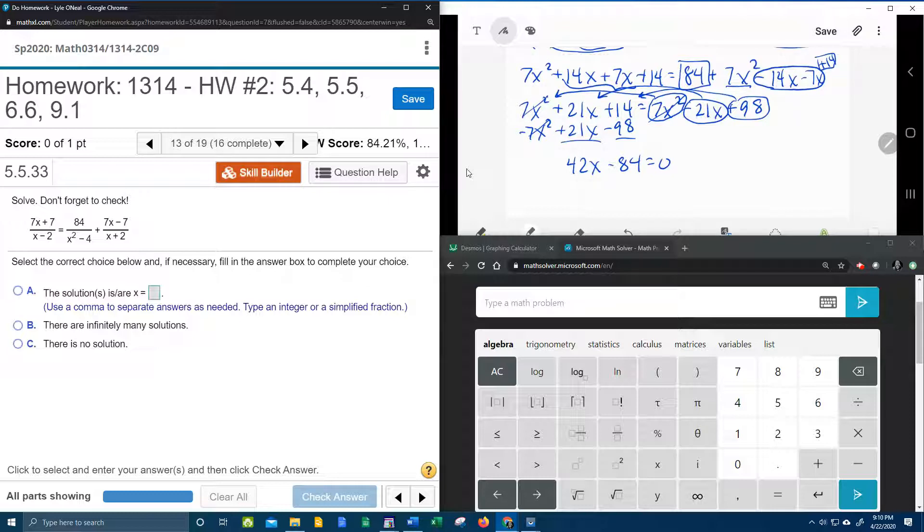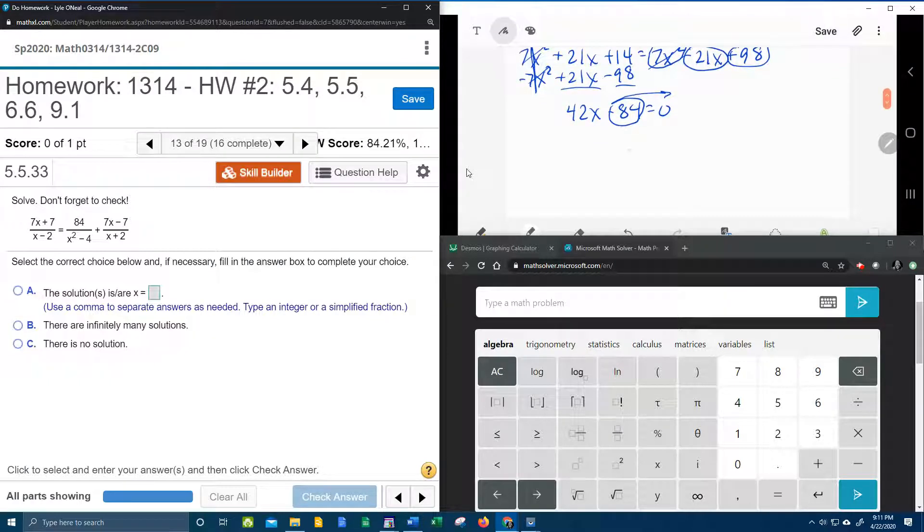Okay, and I just realized that since the x squared is cancelled, this is no longer quadratic. And so, well we're going to have to bring the 84 back over, so that we can solve for x. So we're going to have 42x equals 84. Divide both sides by 42. And we get x equal 2.